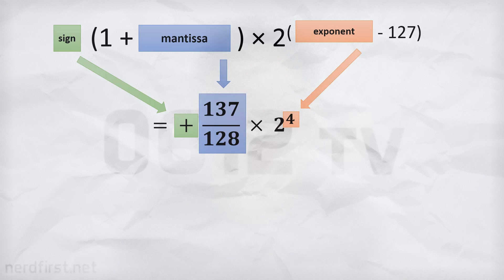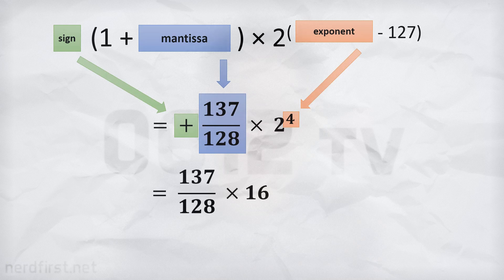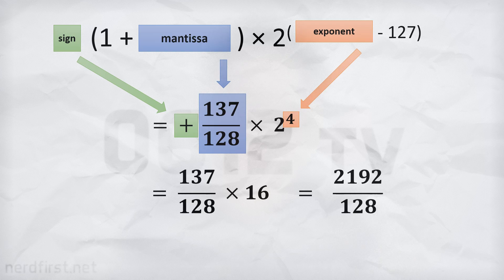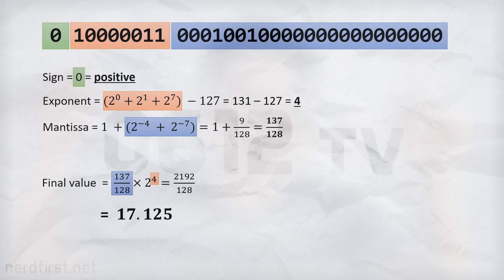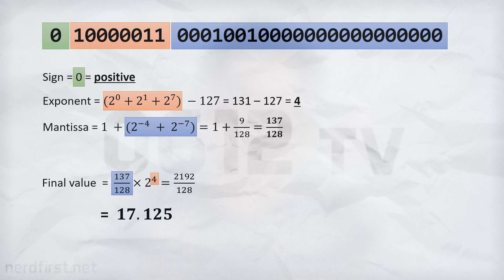Remember the final equation: we've got our sign, 2 to the power of the exponent we've calculated, and our mantissa — and we multiply everything together. Doing this in terms of fractions, we end up with one single fraction, which is essentially a division. This allows us to derive our final decimal value. What we've done is worked our way from the binary representation all the way back to the original decimal. That bit string up there gives us this decimal value — we've just cracked a floating point number.